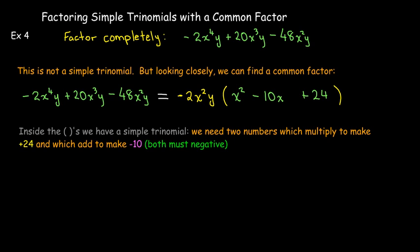So two numbers that multiply to make positive 24 and add to make negative 10 — those are negative 6 and negative 4. So again, I have my three terms: the common factor and the two binomials.